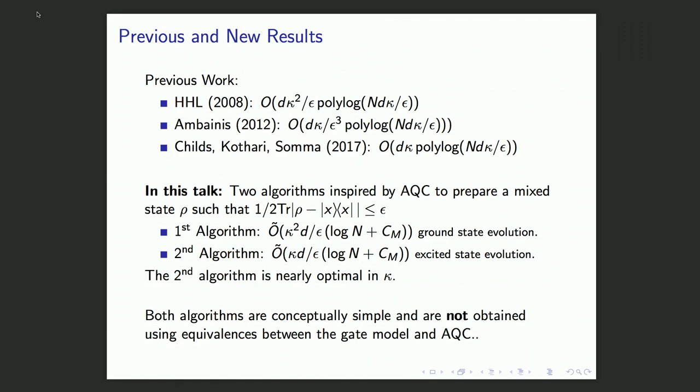For the type of matrices where the condition number itself is small, you get an overall algorithm that's exponentially faster than n. In that paper, they have also shown that the optimal scaling of any quantum algorithm will be linear in kappa. This optimal scaling was later achieved by Ambainis using a very sophisticated subroutine called variable time amplitude amplification. Finally, Childs, Kothari, and Somma improved on the precision dependence of this.